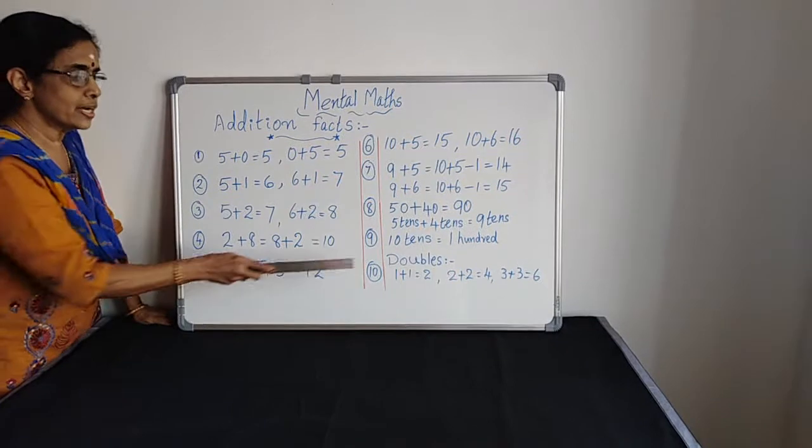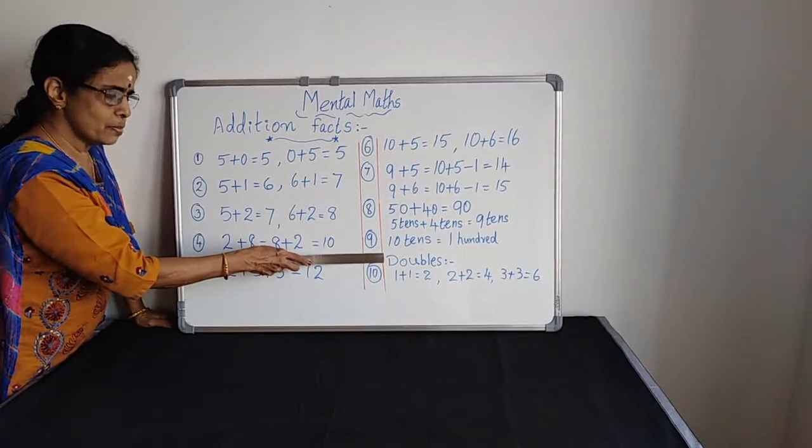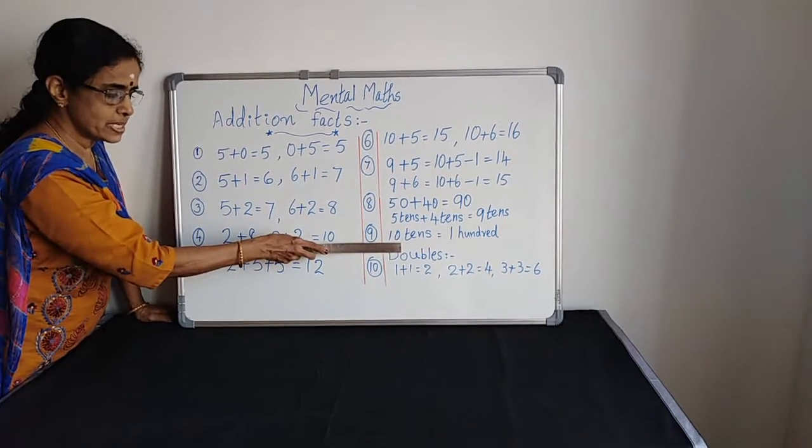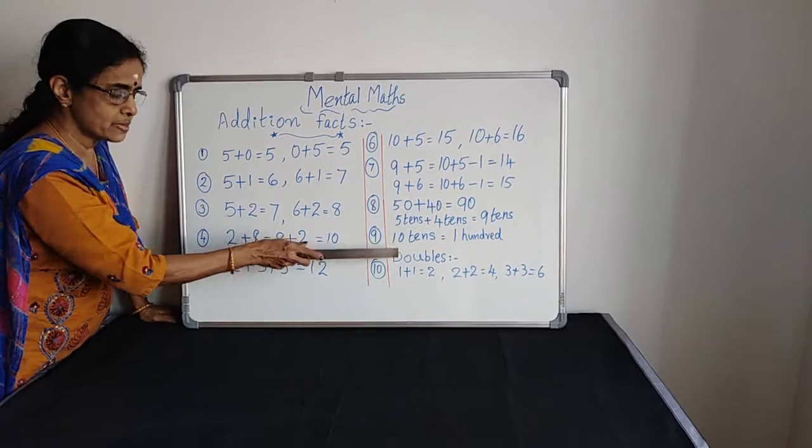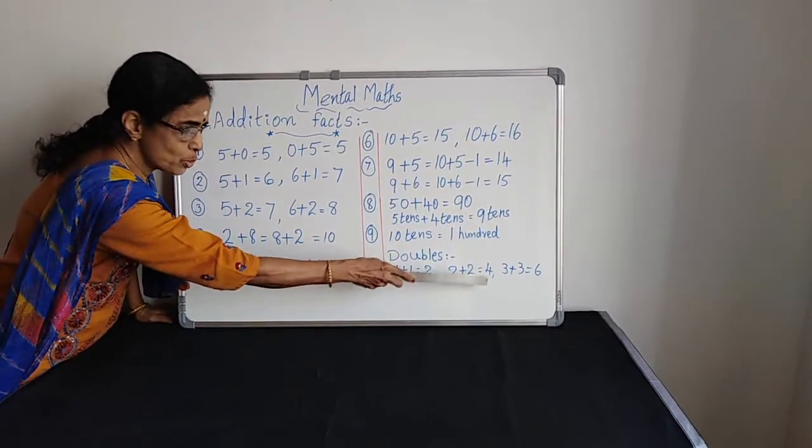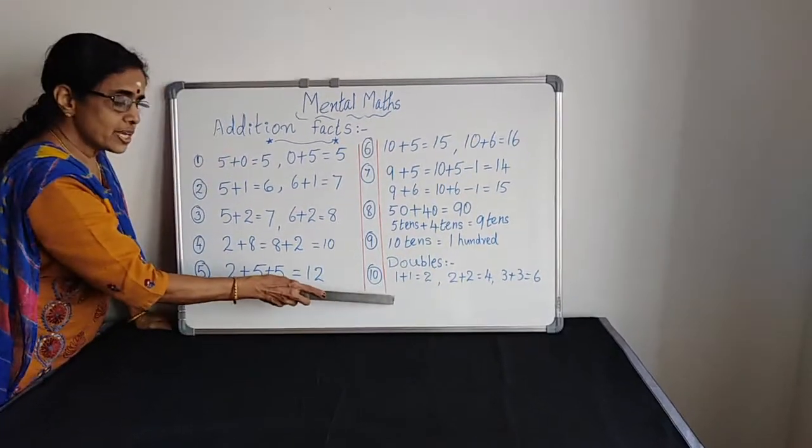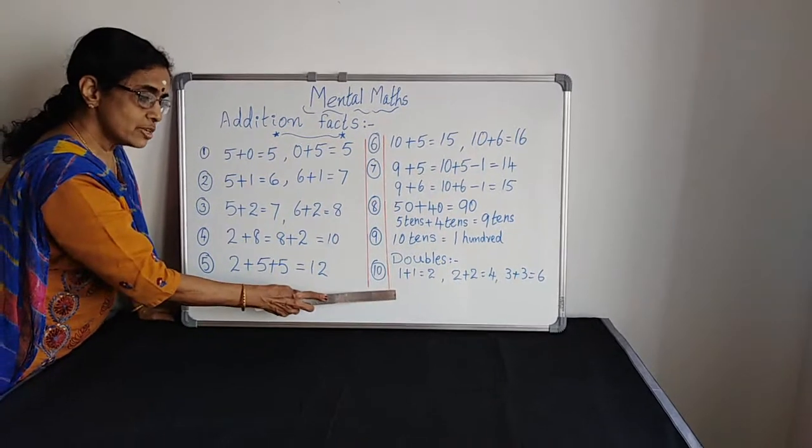Now we are going to learn doubles. When we are adding, take any number and add the same number to make doubles. Here, 1 plus 1 equals 2, 2 plus 2 equals 4, 3 plus 3 equals 6. If you are taking the number 10, add 10, so 10 plus 10 equals 20.